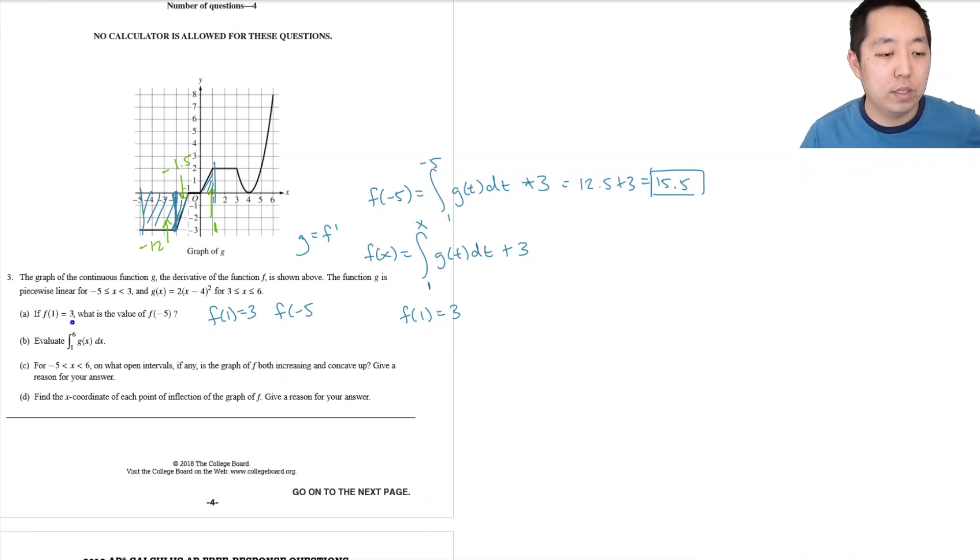Okay, evaluate the integral from 1 to 6. Yeah, from 1 to 6, so now I want this part, this area here from 1 to 6. Well, 1 to 3 is pretty easy, this area here is a 2 by 2, this area is 4 right.